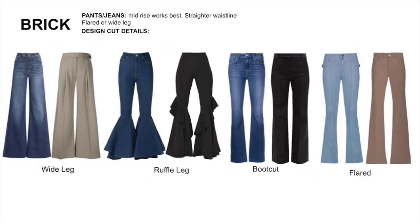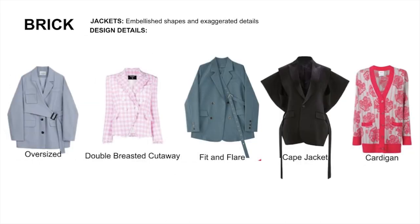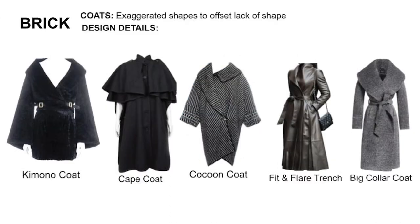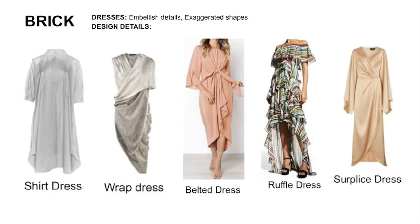For pants and jeans, mid-rise works best. Use flare leg openings to create curves. For jackets, go with styles that have defined shapes — they do not need to be nipped at the waist. For coats, find ones that can create shape; they do not need waist definition. For dresses, go with embellished designs to create curves.